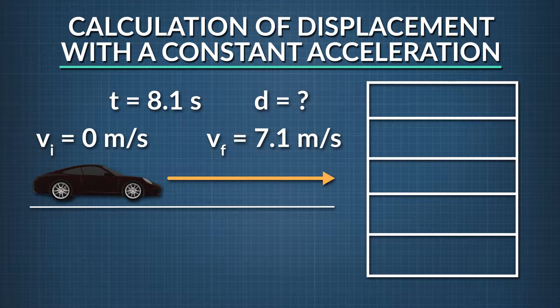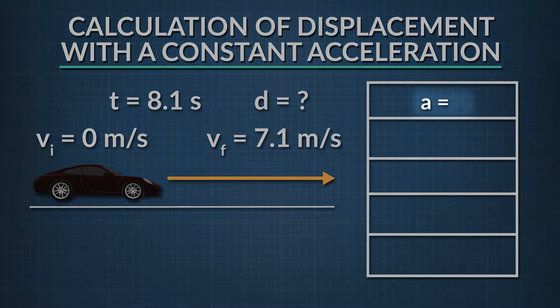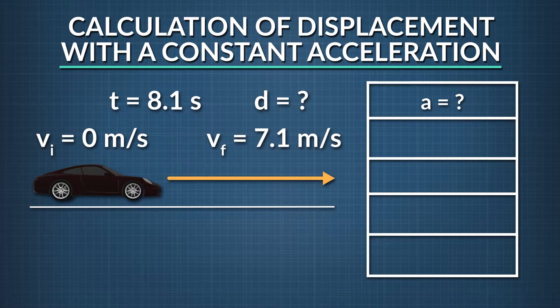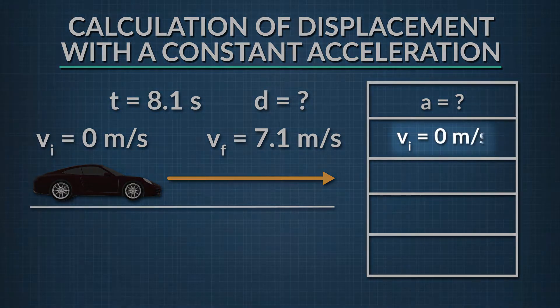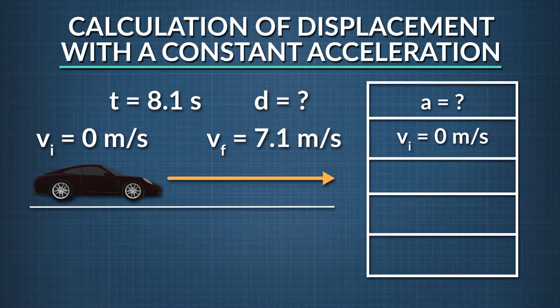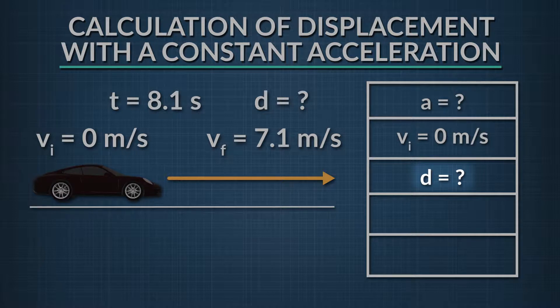In this question, we're told that the car accelerates uniformly. This means the acceleration is constant, although we don't know its value from the information given. We can place that right here in our data table. We also know, since the question indicated that the car accelerated from rest, that the initial velocity is zero. So we can place that in our data table. The question asks us to solve for displacement, so we can write down a d with a question mark here.